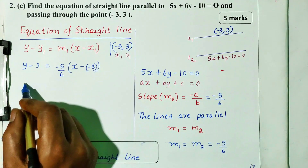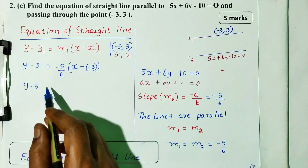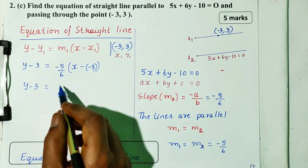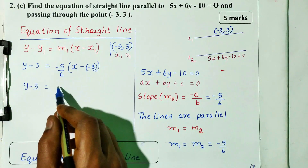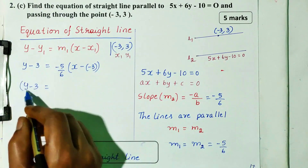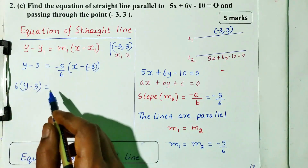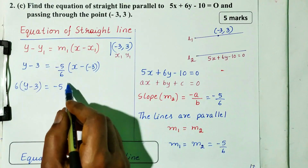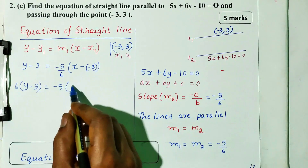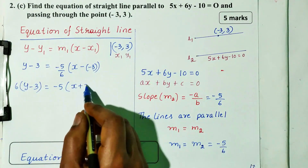Next, we will simplify. So y minus 3 is equal to minus 5 divided by 6. We will multiply. This is minus 5, and minus into minus gives plus, so x plus 3.